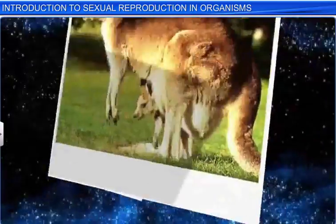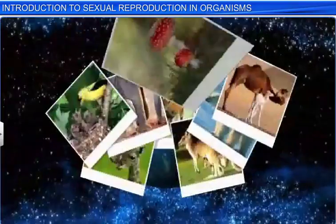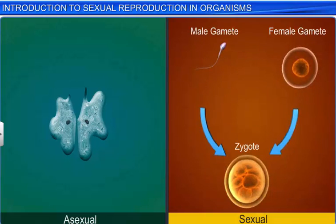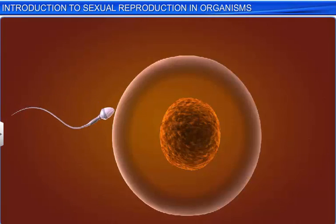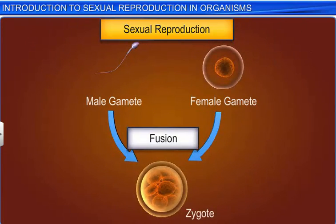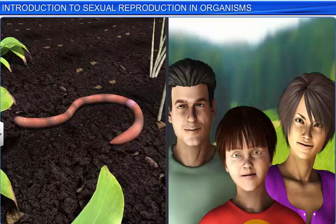Reproduction, an important biological process occurring in living organisms, ensures continuity of life. Organisms reproduce either asexually or sexually. In the case of sexual reproduction, we see the fusion of male and female gametes, which are either produced by the same individual or by different individuals of the opposite sex. Though organisms which engage in sexual reproduction vary in their external and internal structure, the pattern of sexual reproduction remains quite similar.